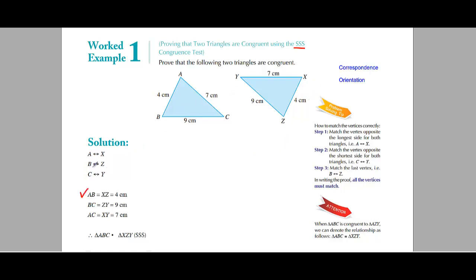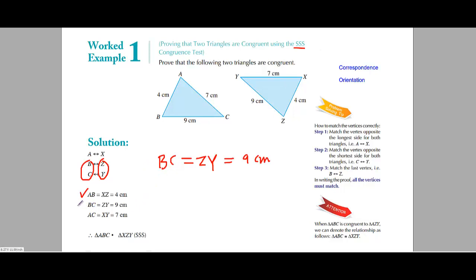Next, we compare the next side. BC must be equal to ZY, and it is mentioned here as well.